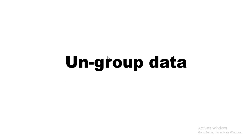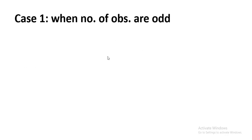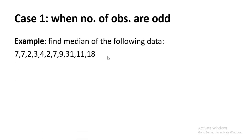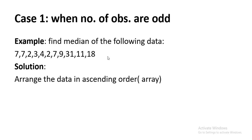We will now start solving questions for ungrouped data. Ungrouped data has two cases. Case 1 is when the number of observations is odd. Given a dataset, the first and most important step is to arrange the data in ascending order.